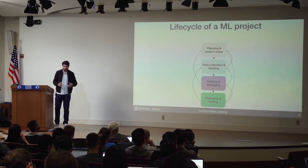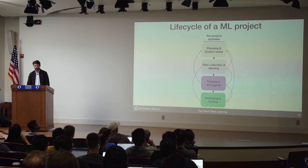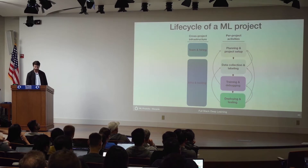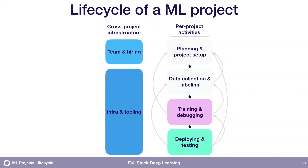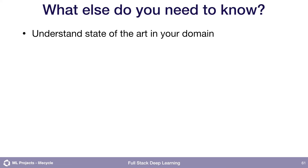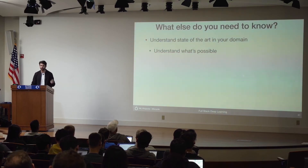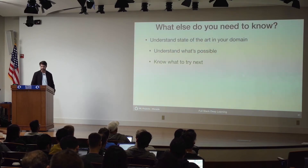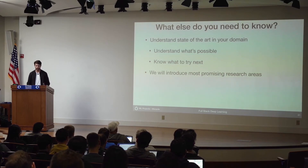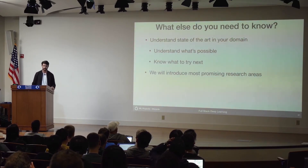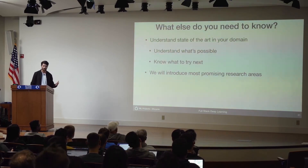This is how I would think about all of the activities happening for a single machine learning project, but there are a few enabling things you also need as an organization to make projects successful. One is how do you set up your team and make sure you're hiring great people? Another is how do you make sure you have infrastructure and tooling that's allowing your team to move fast? You also just need an understanding of what is the state of the art in your domain — to give you a sense of how do you know what's actually possible, what's an easy problem versus one that would need a research team five years to solve. This will also give you ideas for what to try next.